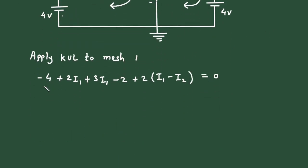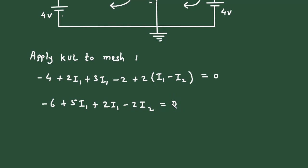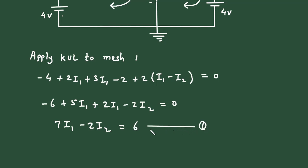Simplifying: minus 4 and minus 2 give minus 6. Collecting I1 terms: 2I1 plus 3I1 plus 2I1 gives 7I1. The I2 term gives minus 2I2. So the equation becomes 7I1 minus 2I2 equals 6. This is equation number 1.